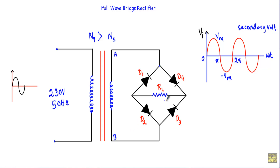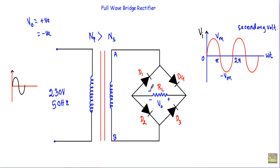The output voltage is taken across the load resistor RL, with one side considered positive and the other negative. The output voltage VO will be positive if RL and VO have the same polarity — that is, if the load resistor has plus on the same side as VO. The output voltage will be considered negative if VO and RL have opposite polarities.